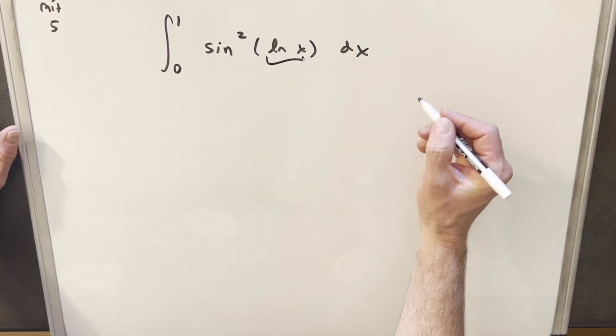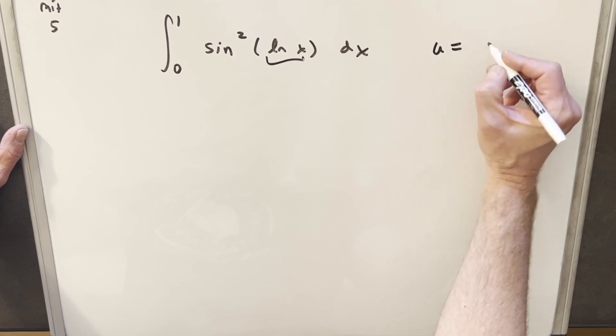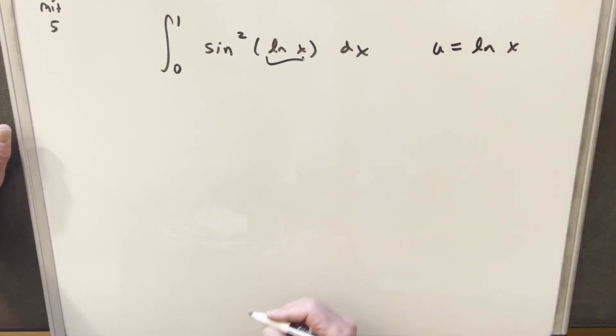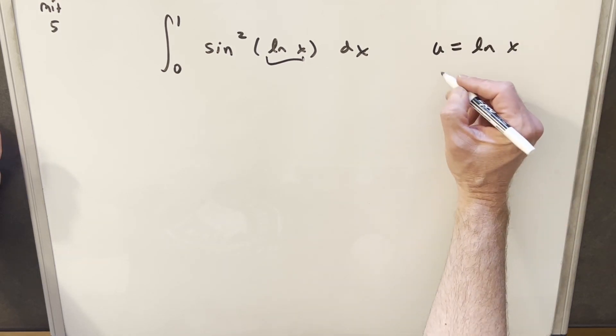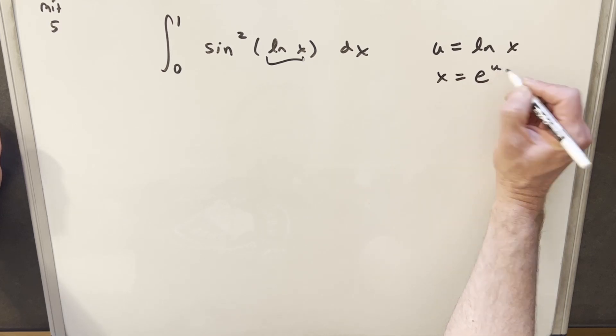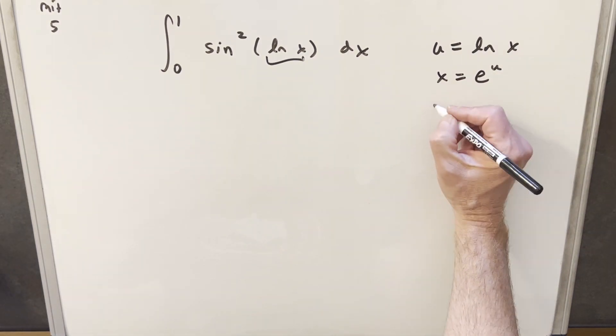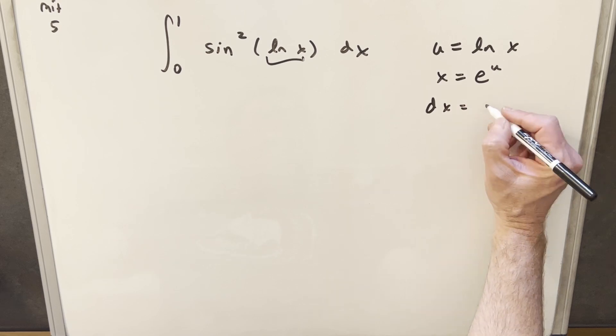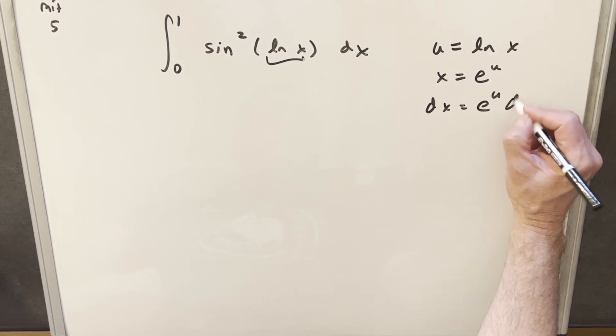We want to take care of this, so I'm going to make my u equal to ln x, and then just solving for x, we're going to have x equals e to the u. Now let's take a derivative here. So for dx, we're going to have just e to the u du.